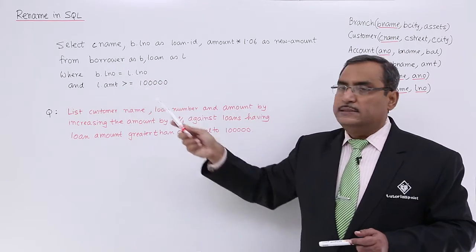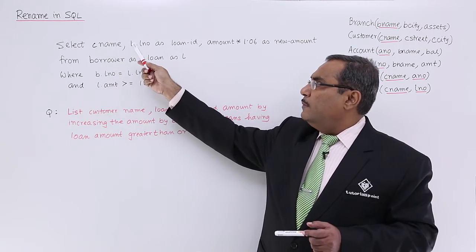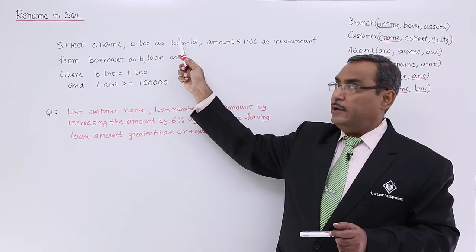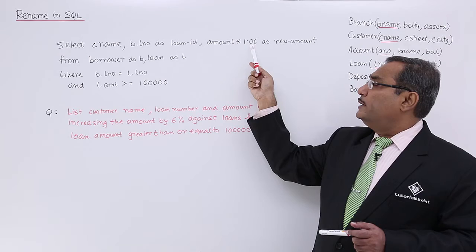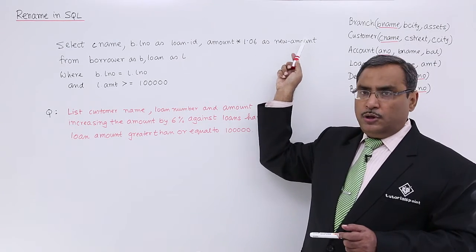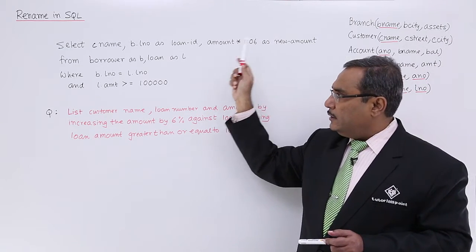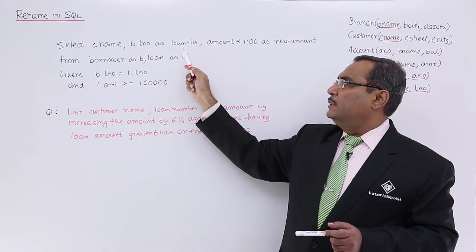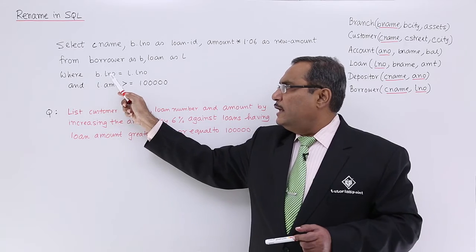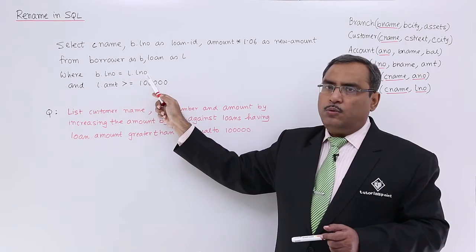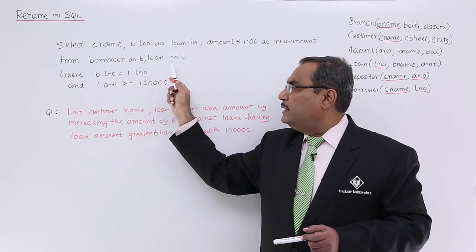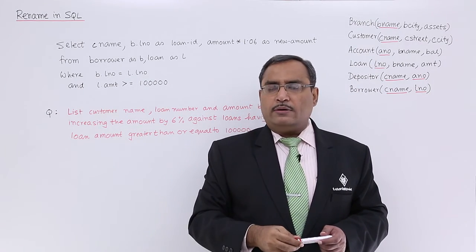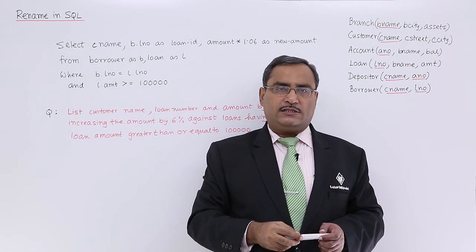I think the query is now clear to us. Select customer name B dot LNO as loan ID, here we are doing the domain renaming. Amount star 1.06 as new amount, that is our domain renaming. From borrower as B, tuple renaming. Loan as L, tuple renaming. Where B dot LNO is equal to L dot LNO, one condition with the renamed names and L dot amount is greater than equal to 1 lakh. In this way, we can write this particular query in SQL.